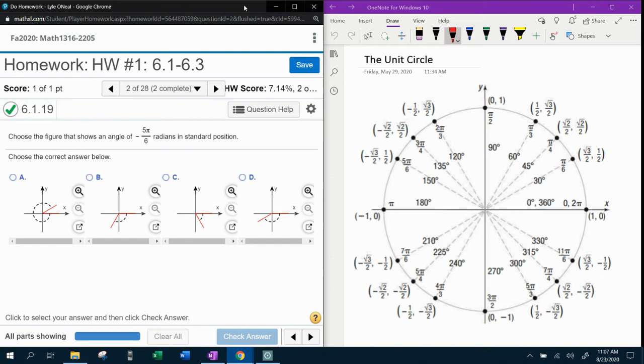So if we come over here to the unit circle, positive angles go counterclockwise. The angle we want to sketch is negative, so that means that we're going to go in the clockwise direction, however far 5 pi over 6 would be.